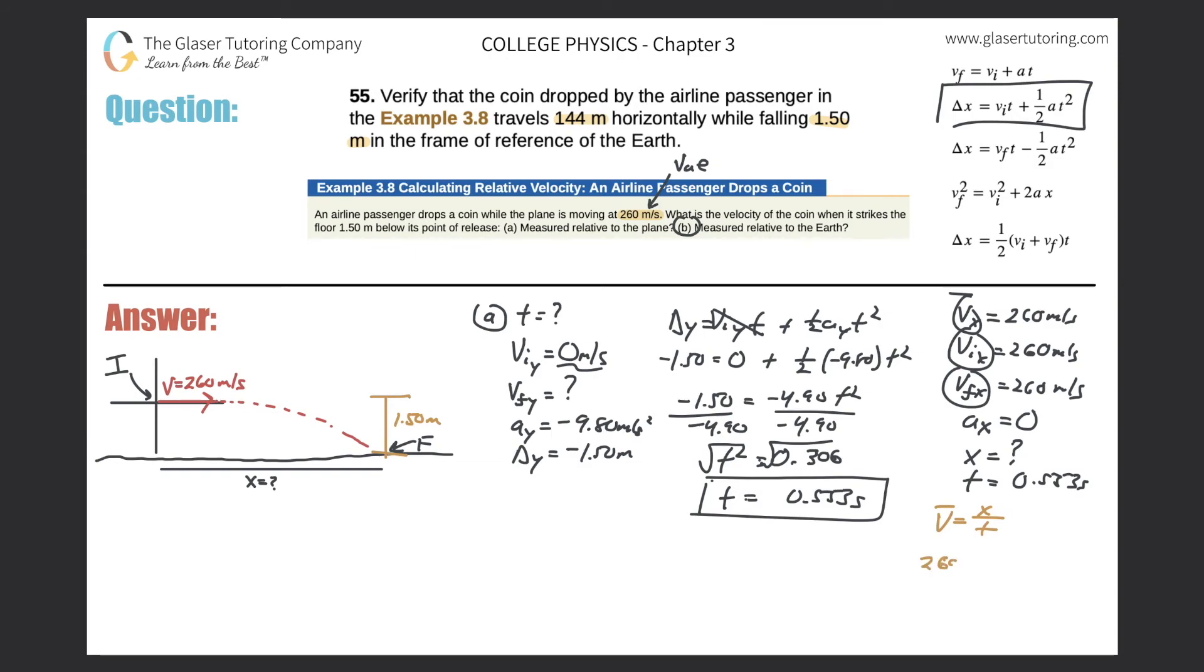So the velocity is going to be 260, that will equal then the x displacement over now 0.553. And now x will be equal to 260 times 0.553, so we get 143.7.